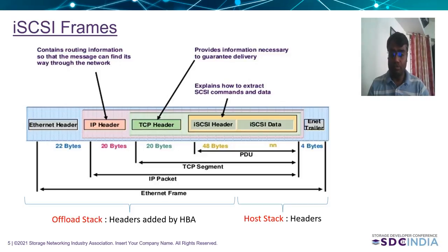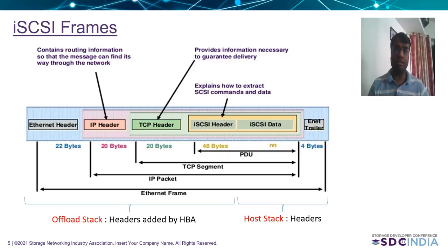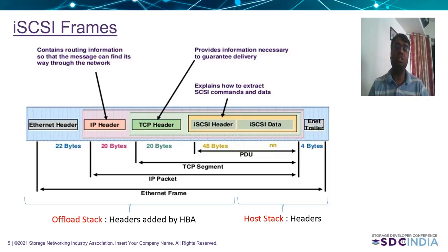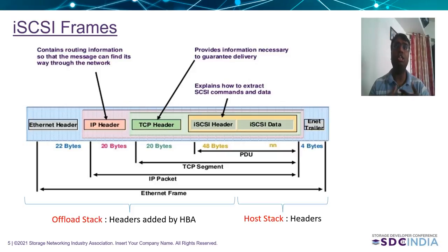In the case of full offload — the third model — one more header is added by the HBA: the iSCSI header. The complete IO context is maintained on the HBA. The HBA is responsible for generating the iSCSI header based on the previous context and information received from the upper layer. For example, if a read command comes from the other side, the HBA needs to understand whether it needs to send a status, an R2T, or send or receive data. The complete context is maintained by the HBA in this case.